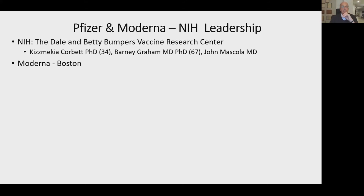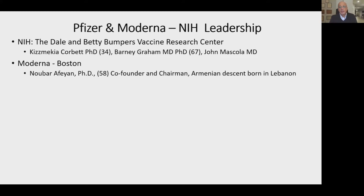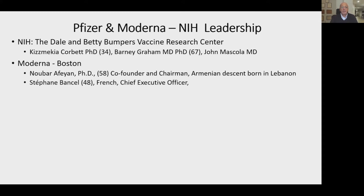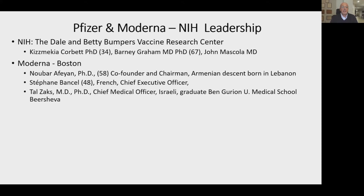Moderna is based in Boston. The co-founder and chair is Noubar Afeyan, of Armenian descent. His family escaped the genocide in Turkey; he was born in Lebanon and is co-founder of Moderna. He is a PhD, 58 years old, with dozens of patents to his name—an absolutely brilliant individual. Stéphane Bancel is a Frenchman who is CEO. Tal Zaks is the MD-PhD chief medical officer, an Israeli who graduated from Ben-Gurion University Medical School in Beersheba. It's hard not to be amazed at the number of immigrants who have played such a vital role in developing the Moderna vaccine.